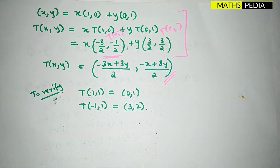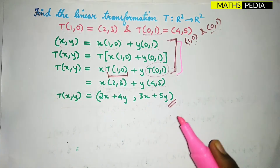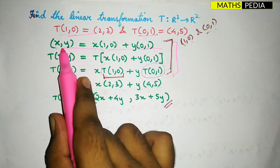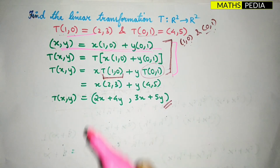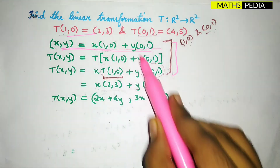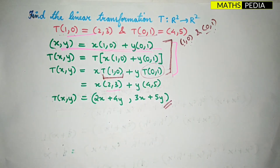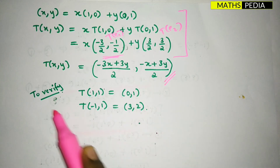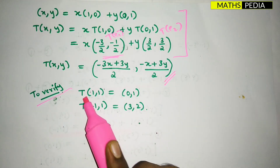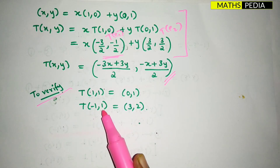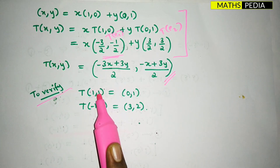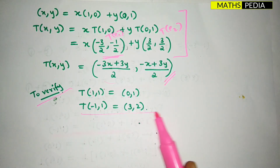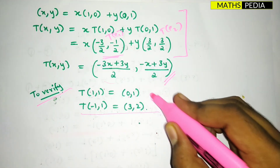Always remember these three steps. Whenever the values T(e1) and T(e2) are not given, you must express the given vectors as linear combinations to find them. Then substitute into the equation to get the linear transformation. To verify your answer, put x=1, y=1 and check if you get (0,1), and put x=-1, y=1 to check if you get (3,2).